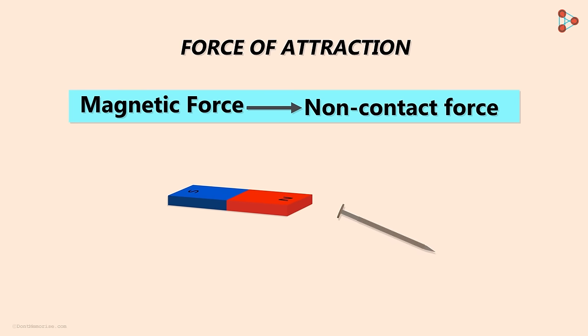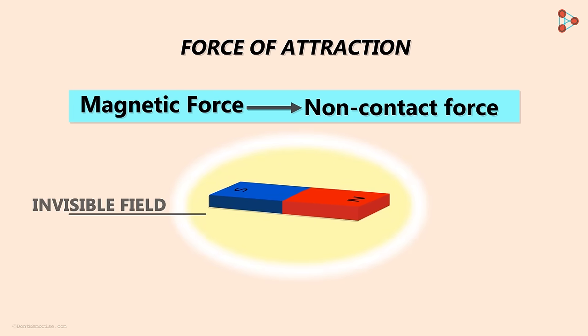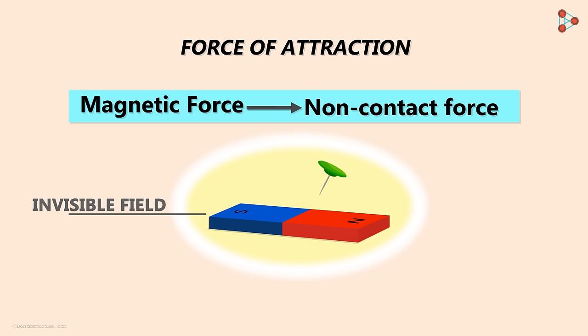But what does this non-contact nature of the magnetic force tell us? It tells us that there is an invisible field produced by the magnet in the space around it. And if you bring any ferromagnetic material in this field, then it experiences that force of attraction. We cannot see this field but it exists. This field is produced by a magnet and hence it's called a magnetic field.